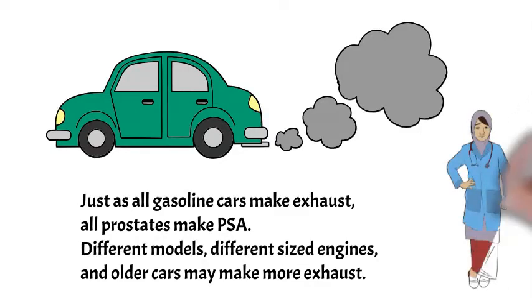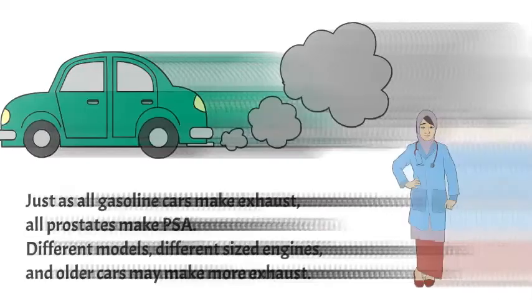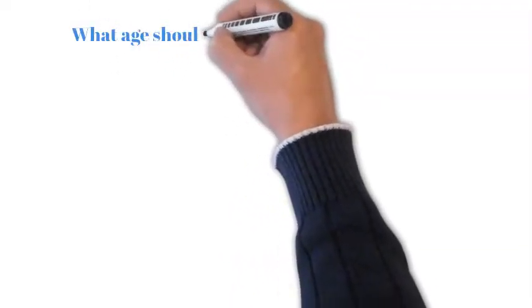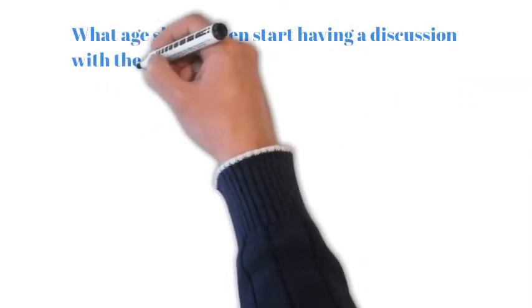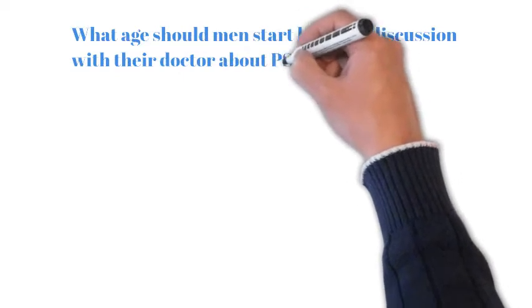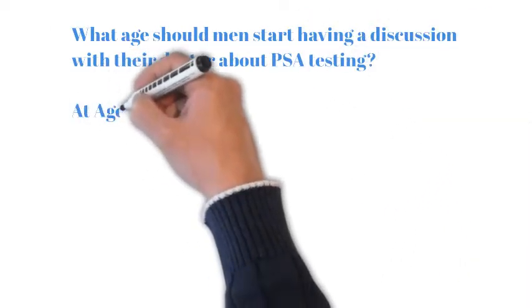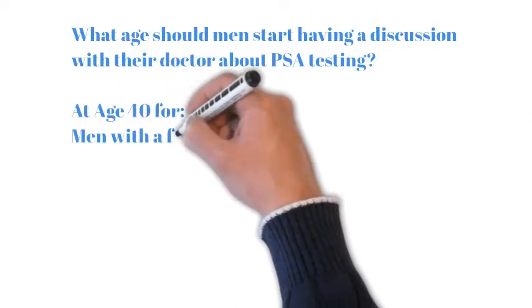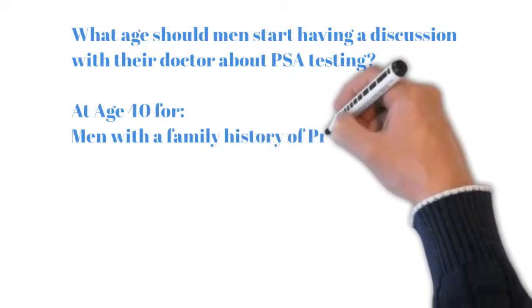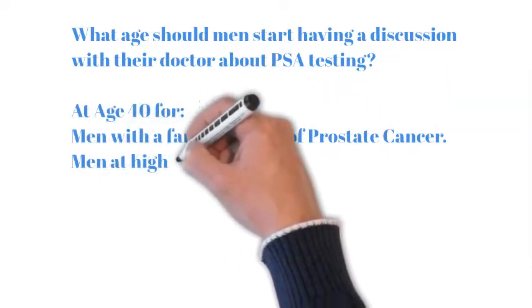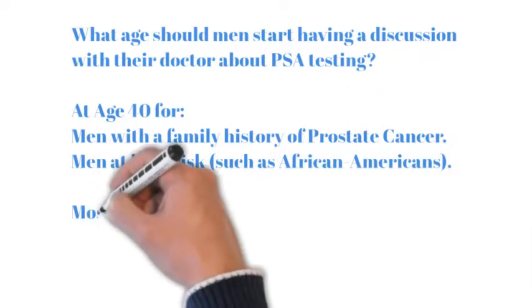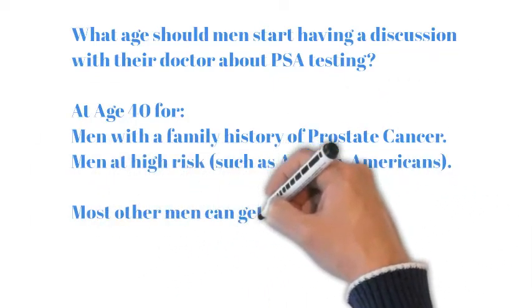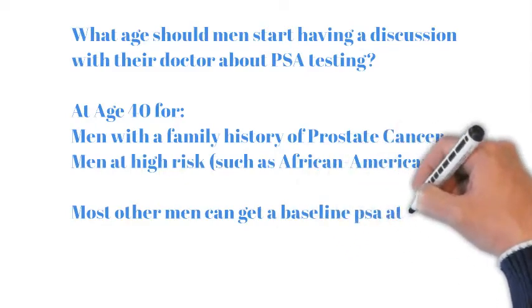What age should men start having a discussion with their doctor about PSA testing? Men with a family history of prostate cancer should start at 40 years old. Men at high risk for prostate cancer, such as African Americans, should start at 40 years old. Most other men can get a baseline PSA at 50 years old.